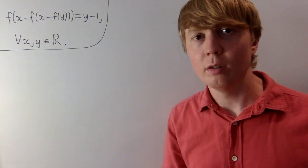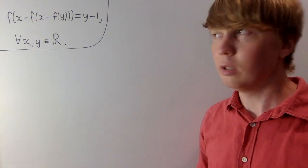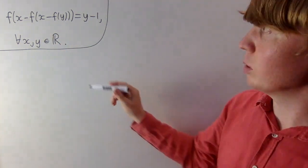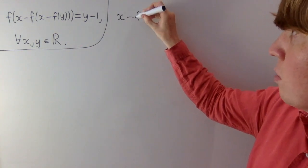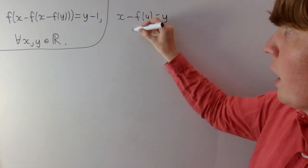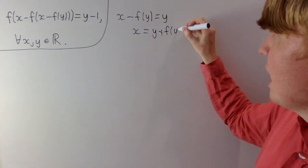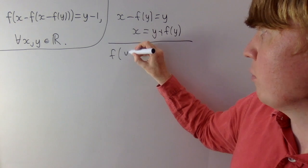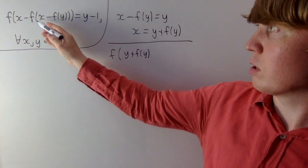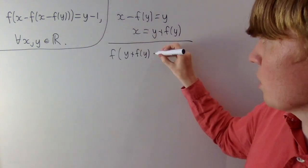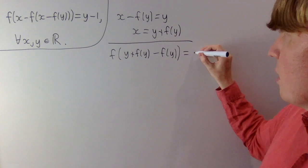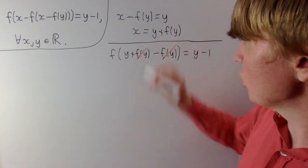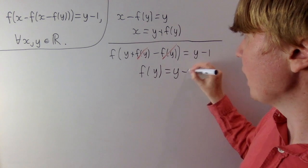Here's our second functional equation. This has been chosen so that it has a really nice solution. It's not immediately obvious how we could get rid of both nested functions, but a sensible starting point is trying to get rid of the innermost function. So we choose x so that x minus f(y) equals y, meaning x equals y plus f(y). Substituting in, on the left-hand side we have f(x), giving us f(y plus f(y)). We've chosen x so that x minus f(y) equals y, so we take away f(y) here, and all of this equals y minus 1. The two f(y)'s cancel, and we're left with f(y) equals y minus 1.